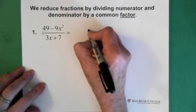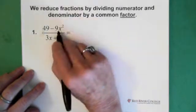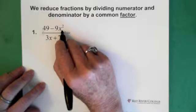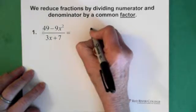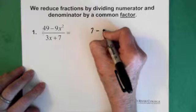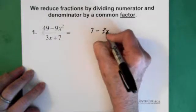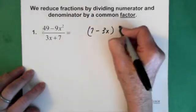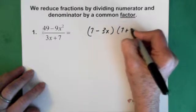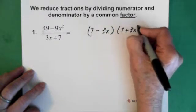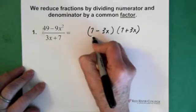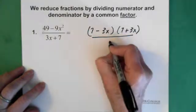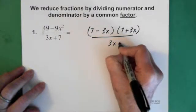So we end up with 49 - 9x² as 7² - (3x)². When we factor it, we end up with (7 - 3x) times (7 + 3x), and that's all divided by 3x + 7.